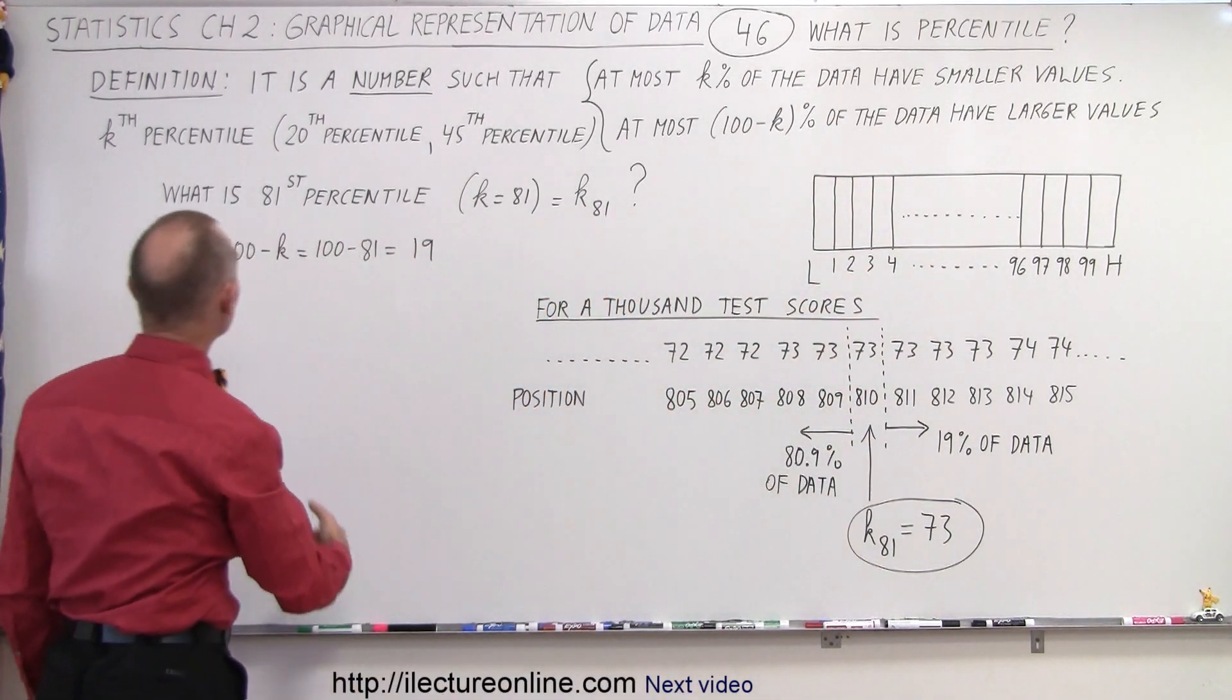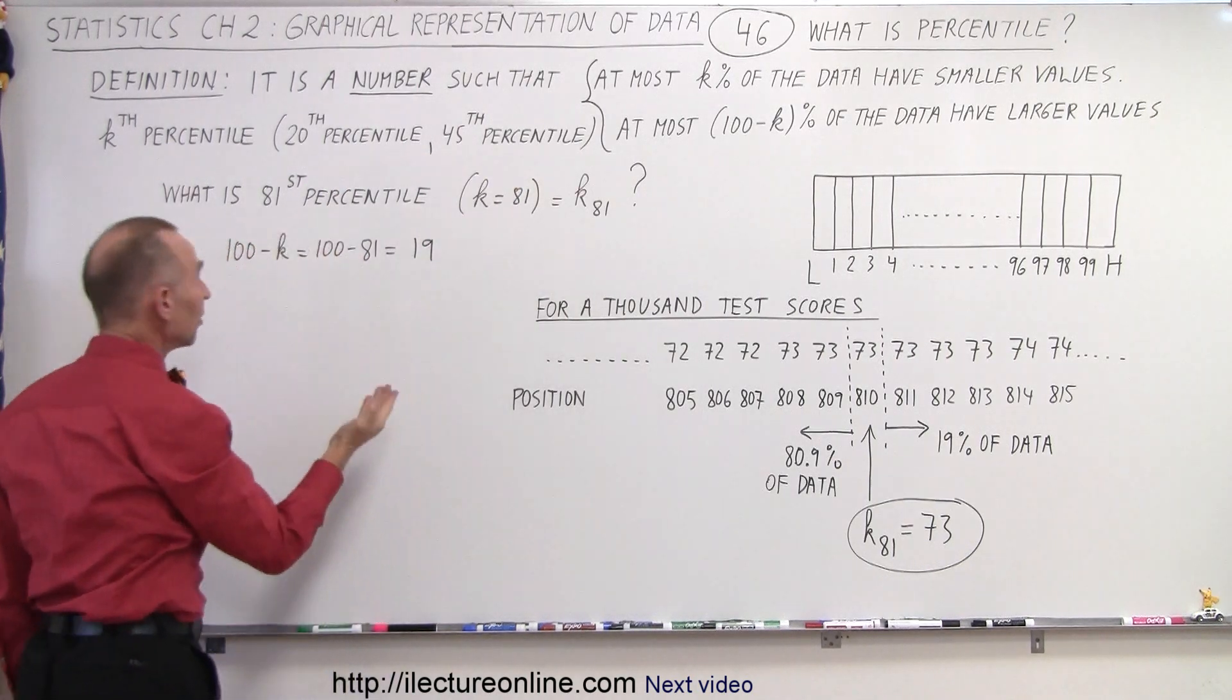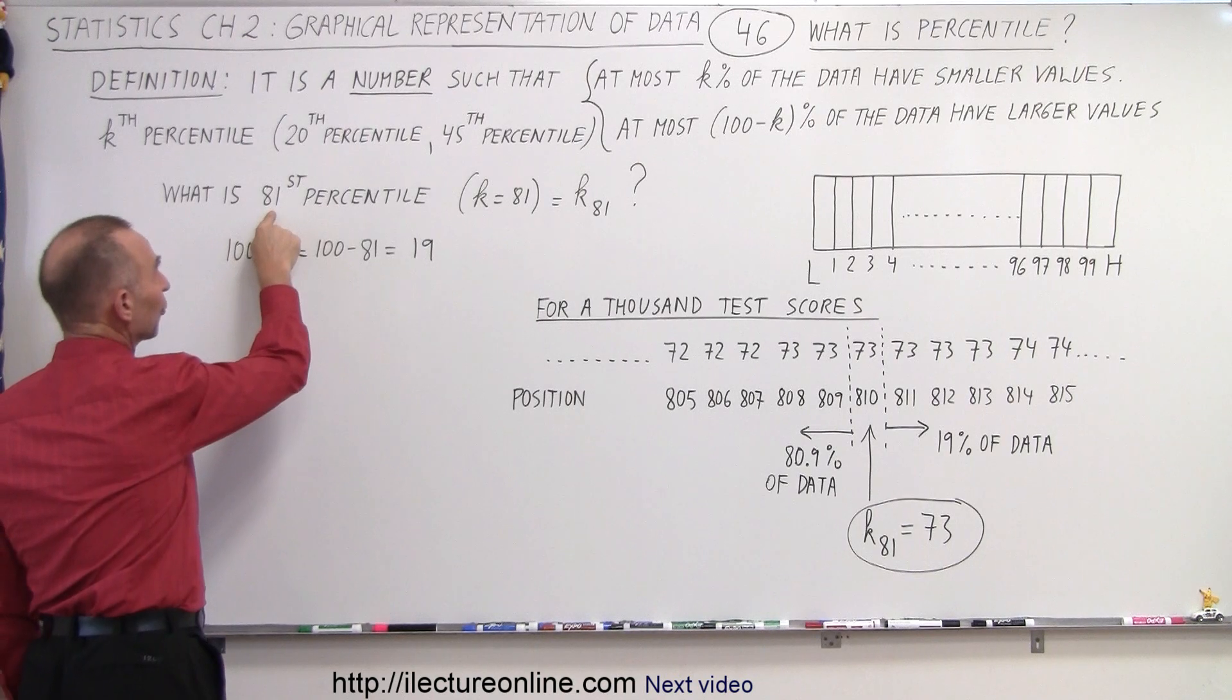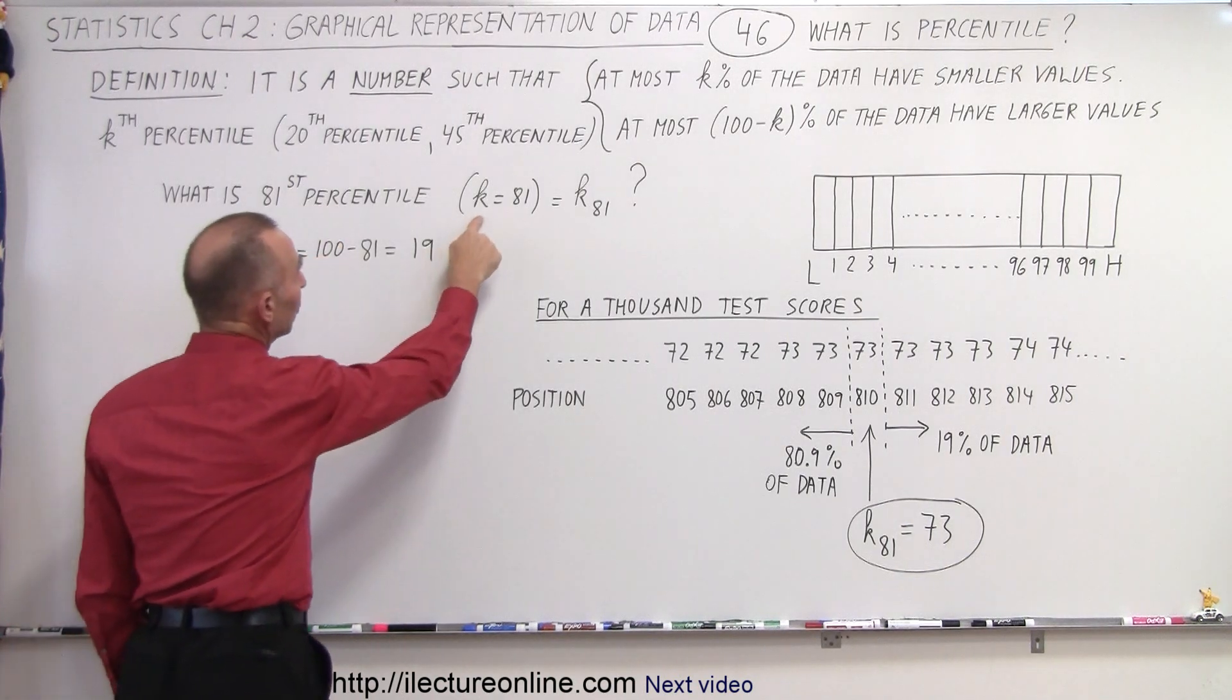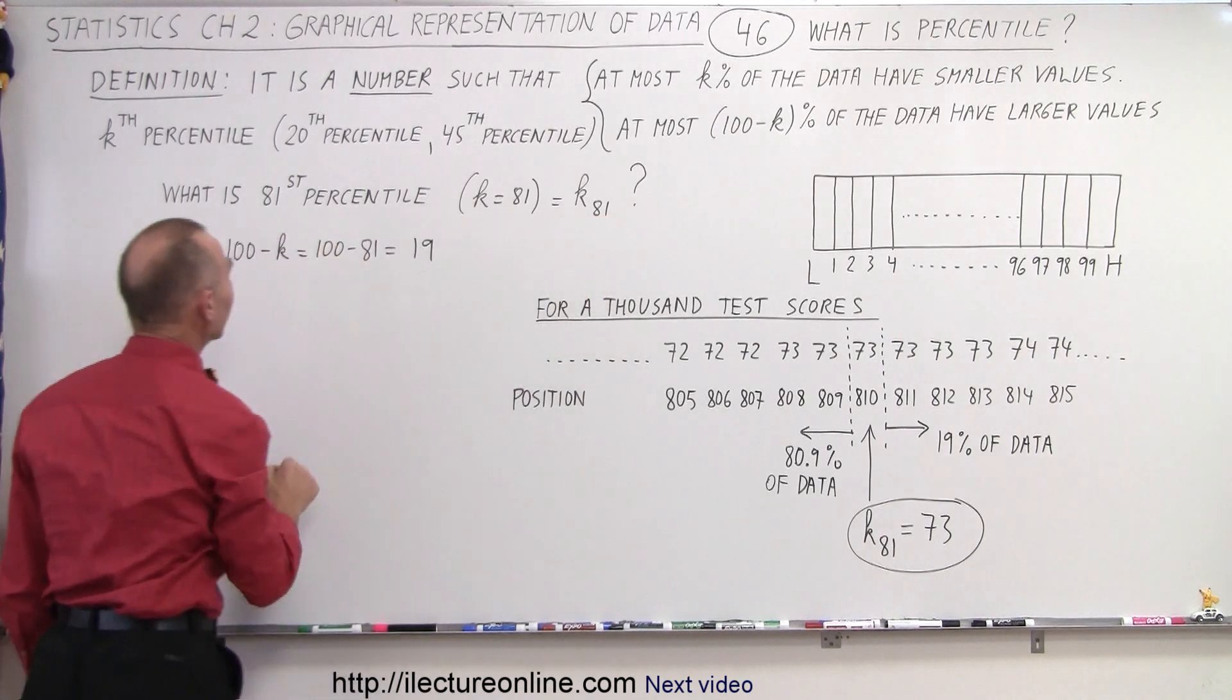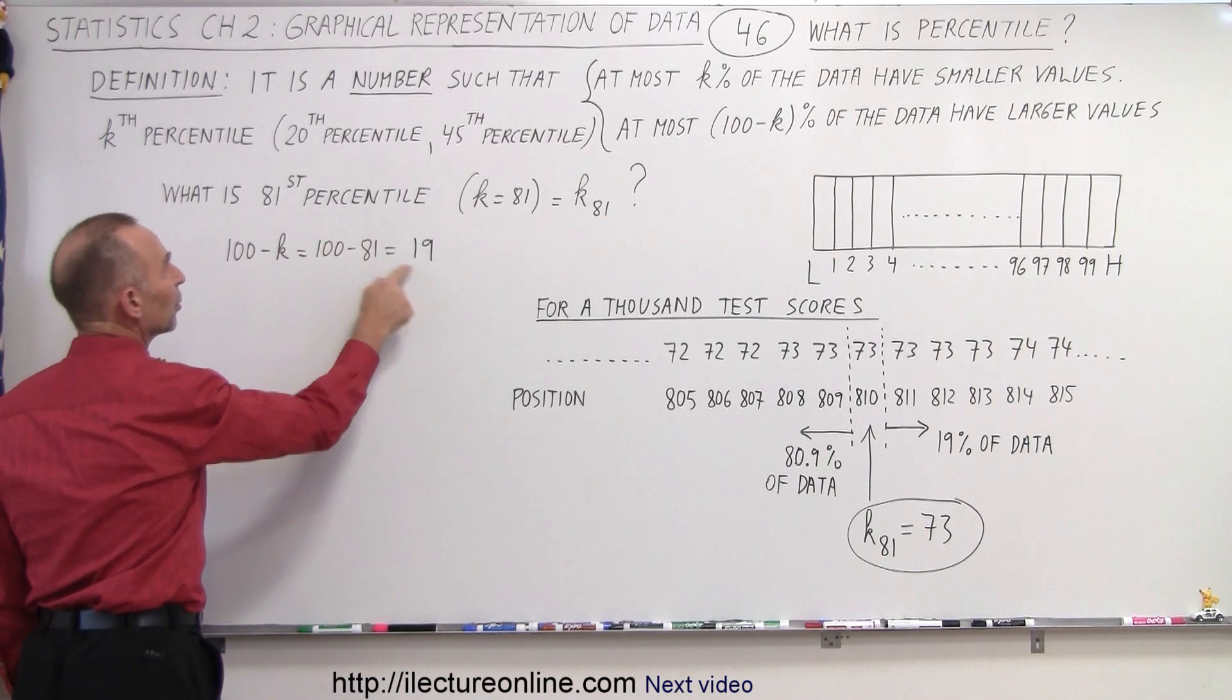For example, we can be dealing with the 20th percentile or the 45th percentile. In this case, our example will ask, what is the 81st percentile? And of course, k would then be 81. We write it as k sub 81 like that. And then we have to find 100 minus k, which is 100 minus 81, which is 19.